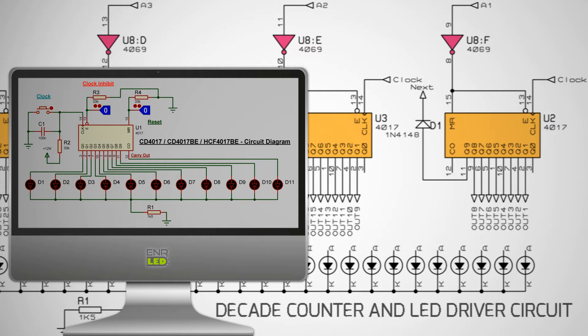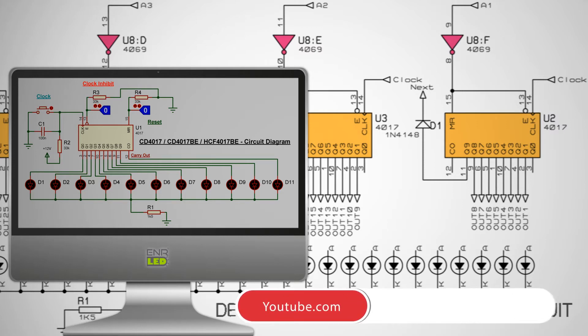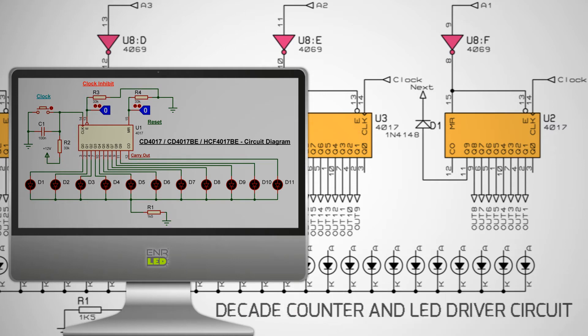By connecting the carryout output to other CD4017 ICs, you can continue counting in the decimal system. When clock inhibit and reset pins are in logic 0 state, if clock pulses are applied to clock, outputs Q0 to Q9 are activated respectively. The counter stops if the clock inhibit input becomes logic 1 while clock pulses are applied to the clock input. Similarly, if the reset input changes to logic 1, the counter is reset and the outputs are cleared.